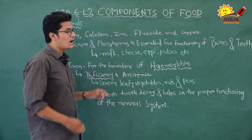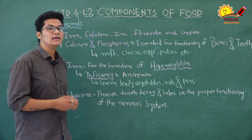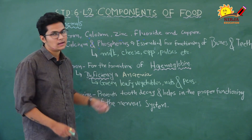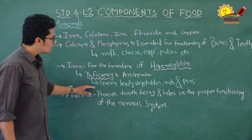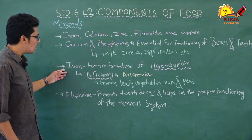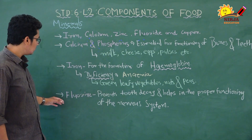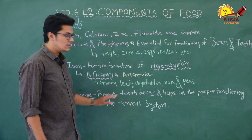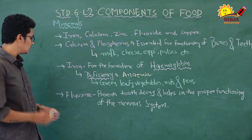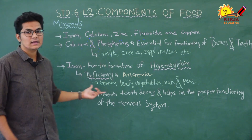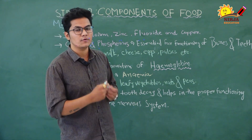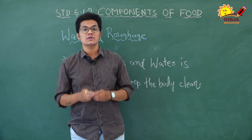Deficiency of iron leads to anemia. If there is a lack of iron in the body, a disease called anemia can occur. Green leafy vegetables, nuts, and peas are sources of iron. Fluorine prevents tooth decay and helps in the proper functioning of the nervous system.